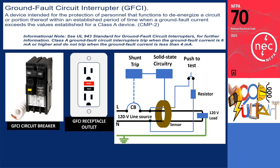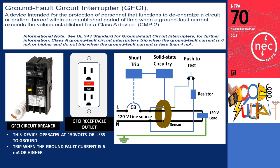A ground fault circuit interrupter (GFCI) is a device intended for the protection of personnel that functions to de-energize a circuit or portion thereof within an established period when a ground fault current exceeds the values established for a Class A device. A photo shows an example of a GFCI circuit breaker and outlets. These Class A devices operate at 150 volts or less to ground. This ground fault circuit interrupter trips when the ground fault current is 6 milliamperes or higher, and does not trip when the ground fault current is less than 4 milliamperes.